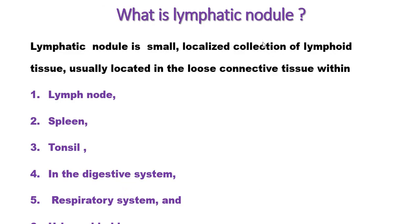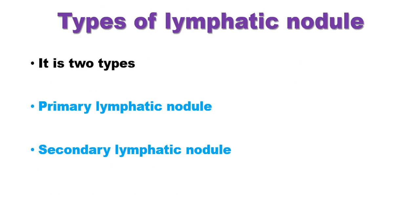A lymphatic nodule is a small, localized collection of lymphoid tissue, usually located in the loose connective tissue within the lymph node, spleen, tonsil, digestive system, respiratory system, and urinary bladder. These lymphatic nodules are found in secondary lymphatic organs. There are two types: the primary lymphatic nodule and the secondary lymphatic nodule.